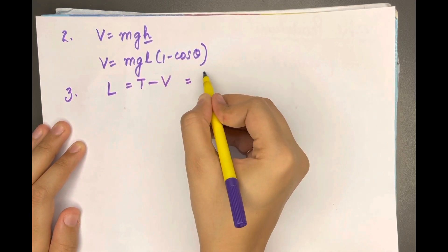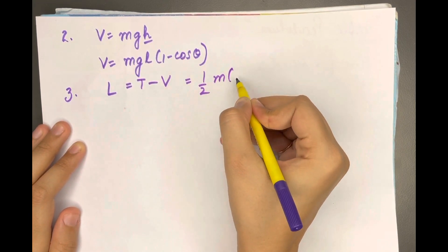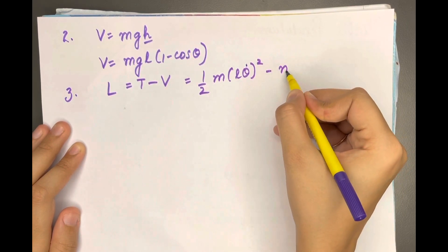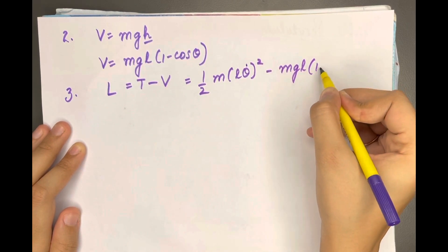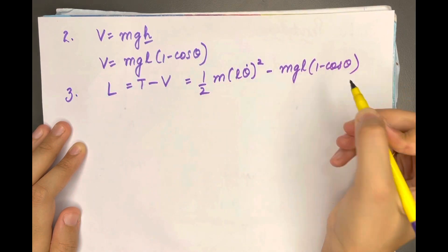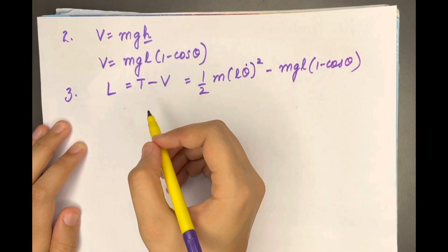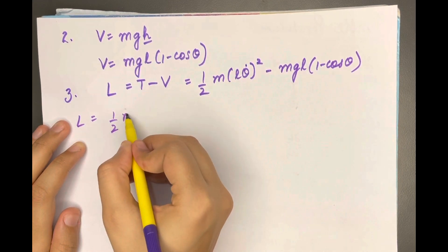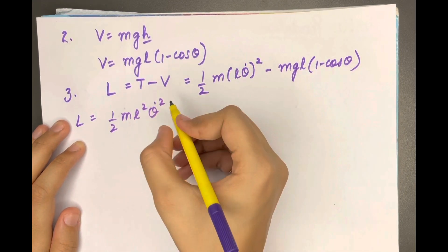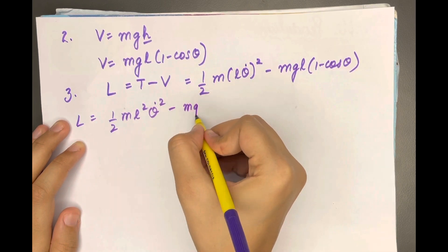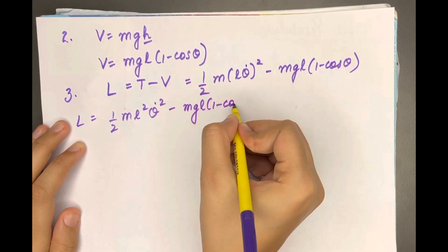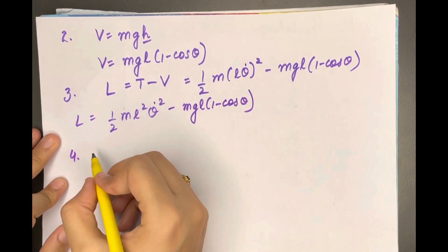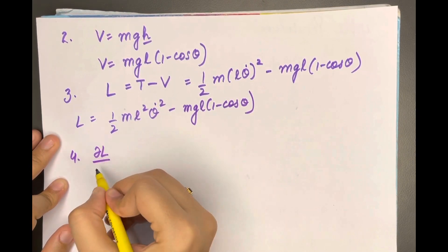T was ½ml²θ̇² and V was mgl(1 − cosθ), so the Lagrangian is L equals ½ml²θ̇² minus mgl(1 − cosθ). Our fourth step is to calculate the required partial derivative quantities.